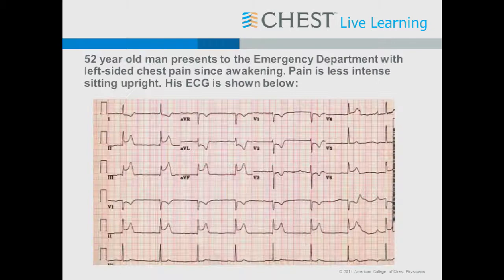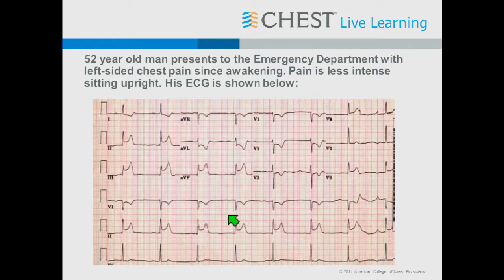Here's a case: a 52-year-old man presents to the emergency department with left-sided chest pain since awakening. The pain is less intense when he sits upright. Which of the following is the most appropriate immediate action? A: send the patient directly to the cath lab if you can achieve a door-to-coronary intervention time of less than 90 minutes. B: administer fibrinolytic therapy. C: administer calcium channel blocker and nitrates. D: administer aspirin and obtain an echocardiogram.